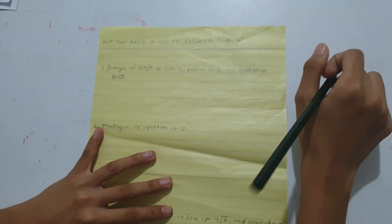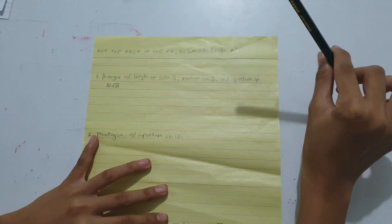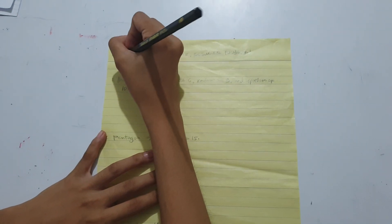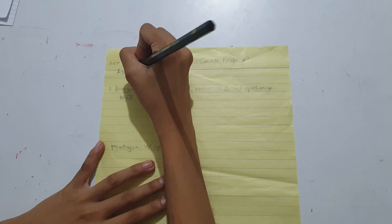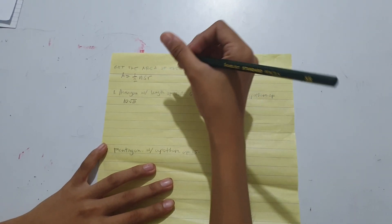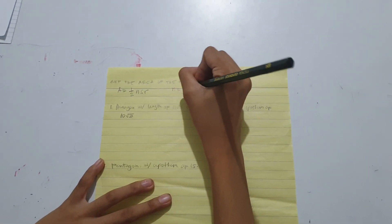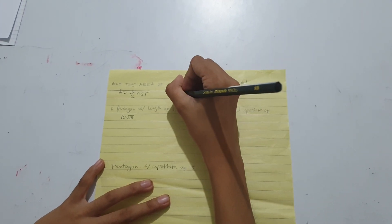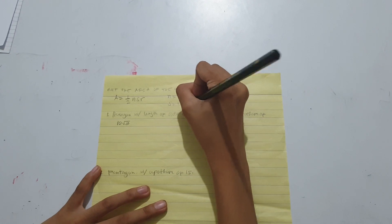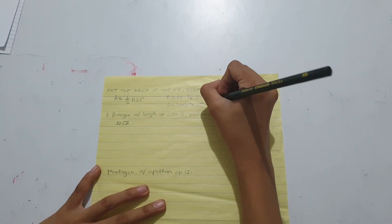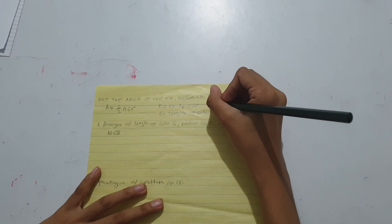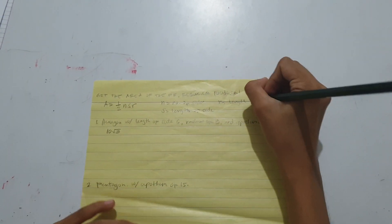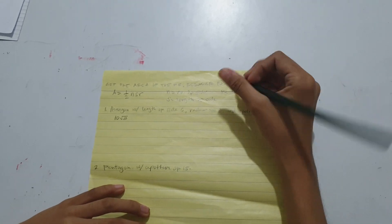Our topic for today is how to get the area of a regular polygon with the given formula A equals one-half N S R, where N is the number of sides, S is the length of each side of the regular polygon, and R is the length of the apothem.